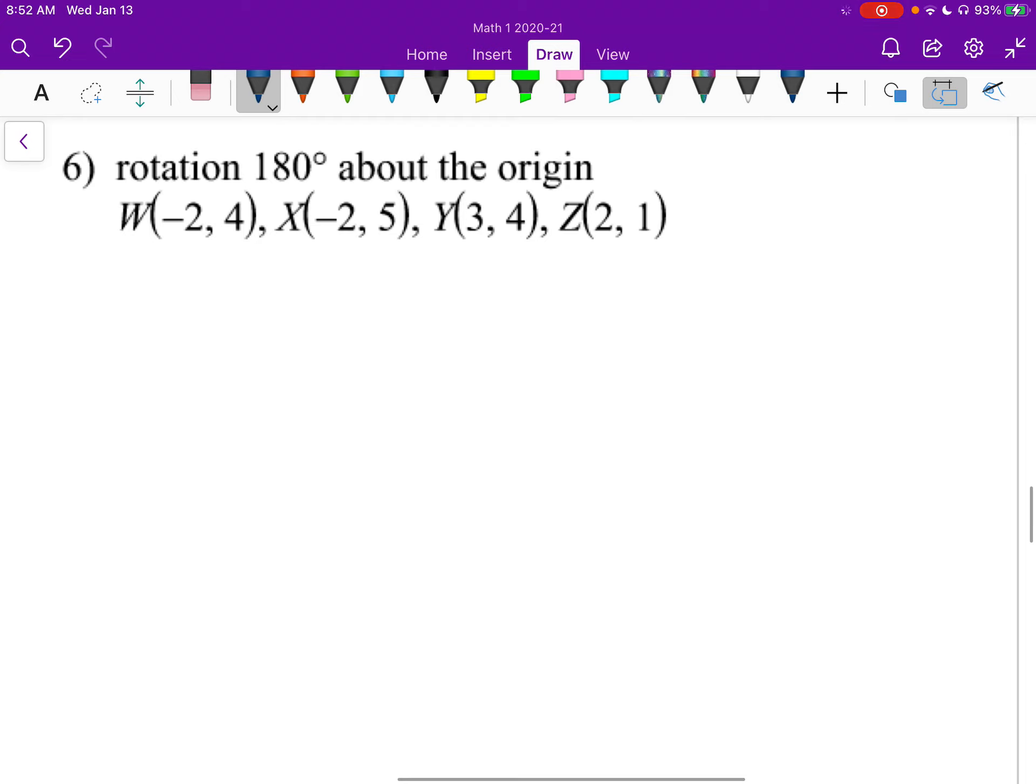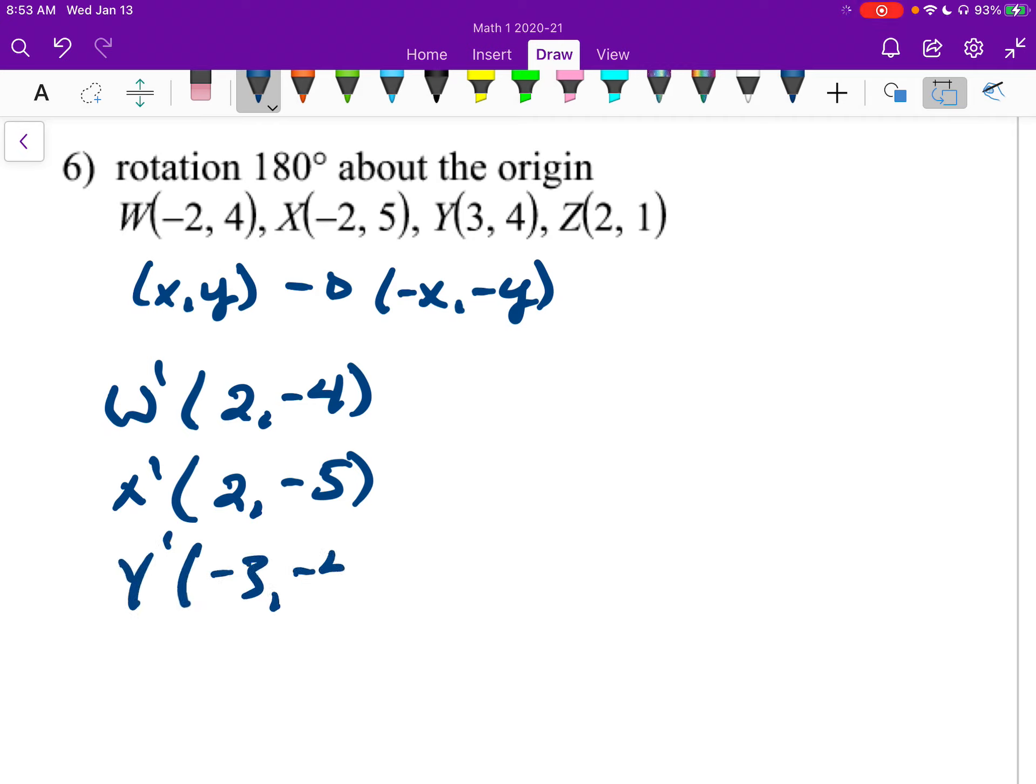Number six. Rotation 180 degrees. This takes x and y, and it goes to negative x, negative y. I think that one's pretty easy to remember. So w prime will be 2, negative 4. x prime will be 2, negative 5. y prime will be negative 3, negative 4. And z prime will be negative 2, negative 1. All I did there was I swapped the signs.